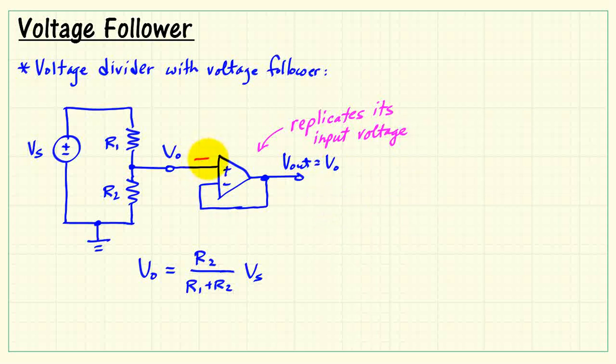We could say that the voltage follower output is identical to what the voltage divider is producing. Since the op-amp has such high input resistance, that satisfies our requirement of drawing zero current from the voltage divider. And that means our design equation for the voltage divider works reliably.